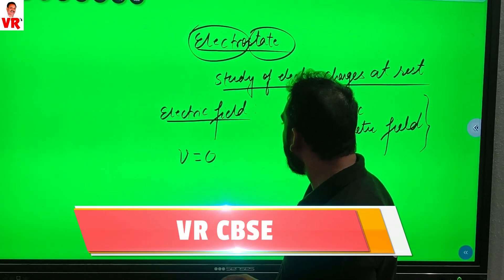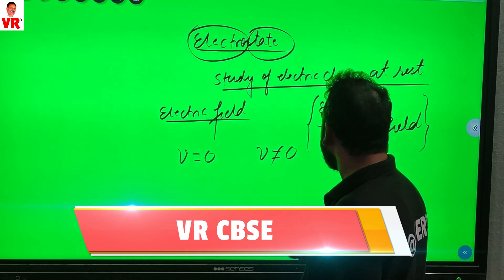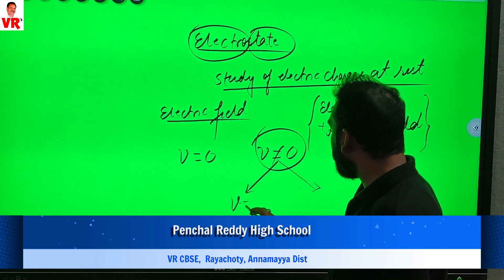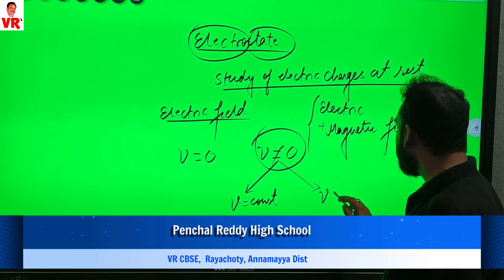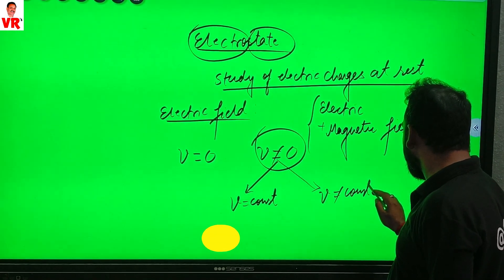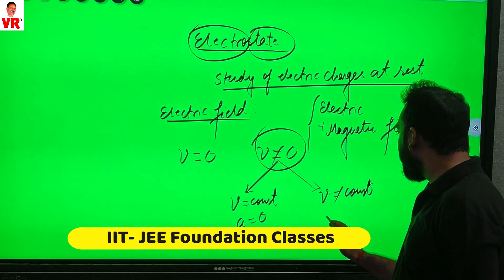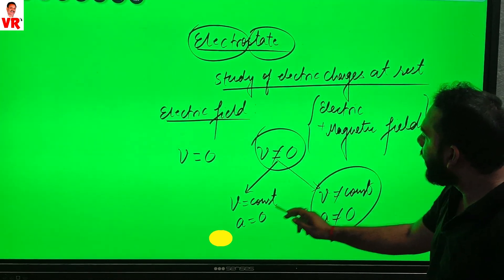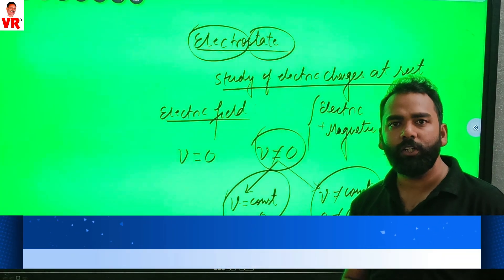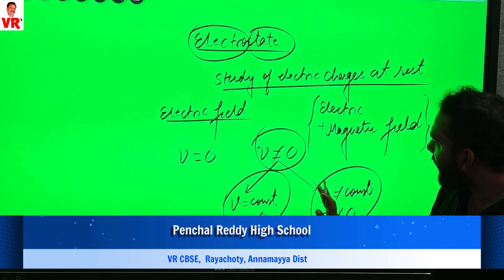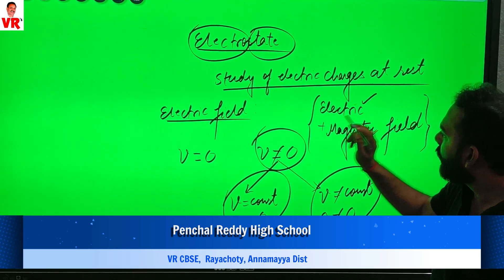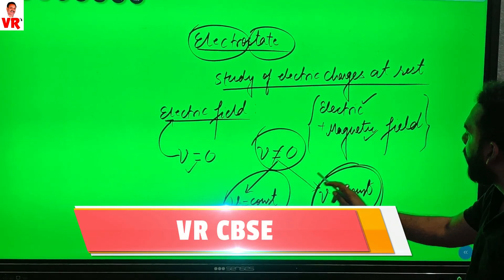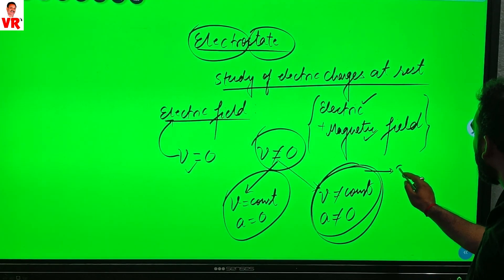If velocity is zero, only an electric field is created. If velocity is non-zero, two types of motion may occur: velocity constant, or velocity non-constant. In the case of constant velocity, acceleration is zero — electric plus magnetic field. If velocity is non-constant, meaning accelerated motion, then electromagnetic waves are produced.